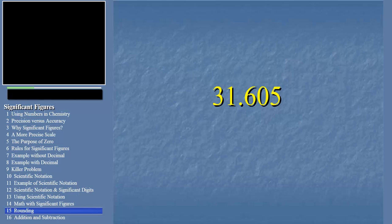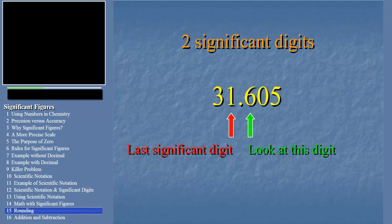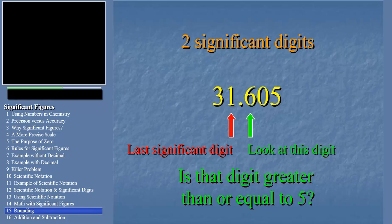First we need to look at the digit next to the last significant digit. Remember from our last slide that we want our answer to have 2 significant digits, so in our answer the digit we have to round is the second digit. The digit that decides how we round is the third. The value of that digit is 6. So we ask ourselves, is that digit greater than or equal to 5? Well greater than obviously, so we round our last significant digit up. In this case we round the 1 up to a 2. So the answer in the previous slide expressed to the correct number of significant figures is 32.